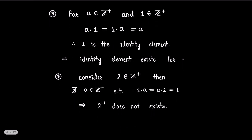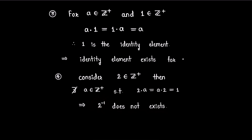For any positive integer a, we know that 1 is also a positive integer and we can observe that a dot 1 equals 1 dot a equals a, therefore 1 plays the role of the identity element — so identity element exists. However, consider the positive integer 2: there does not exist any positive integer a such that 2 dot a equals a dot 2 equals 1, therefore 2-inverse does not exist. Thus the given set G with the defined binary operation will not form a group.